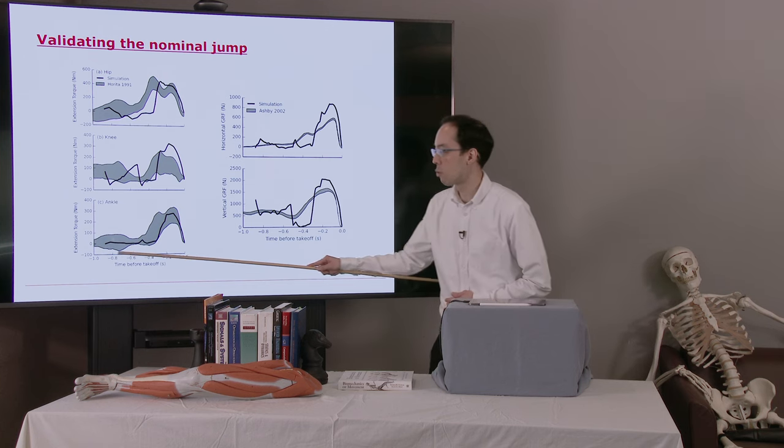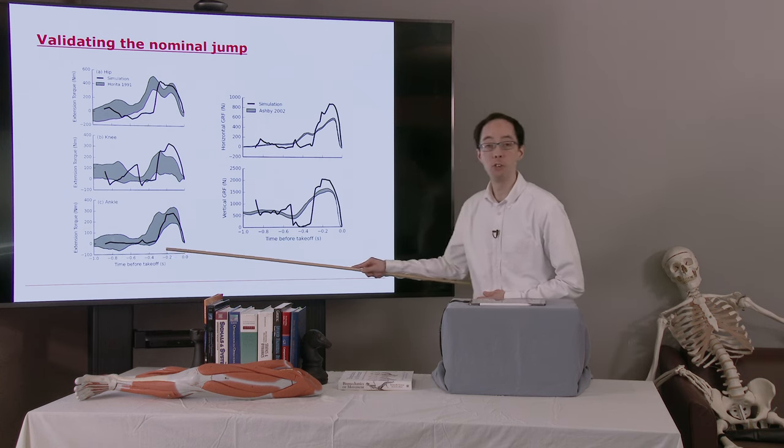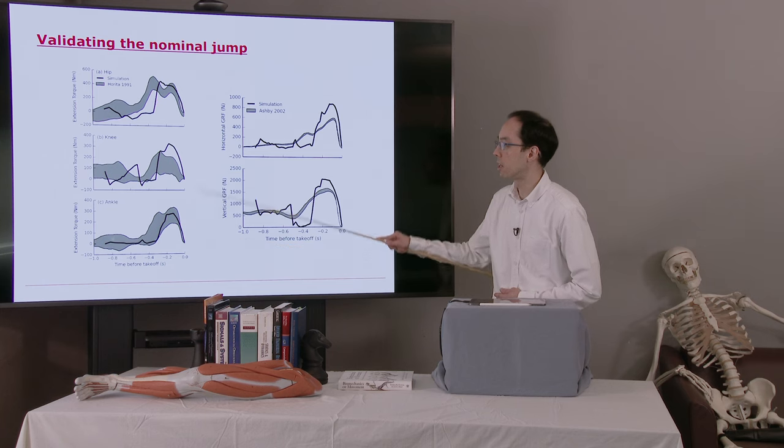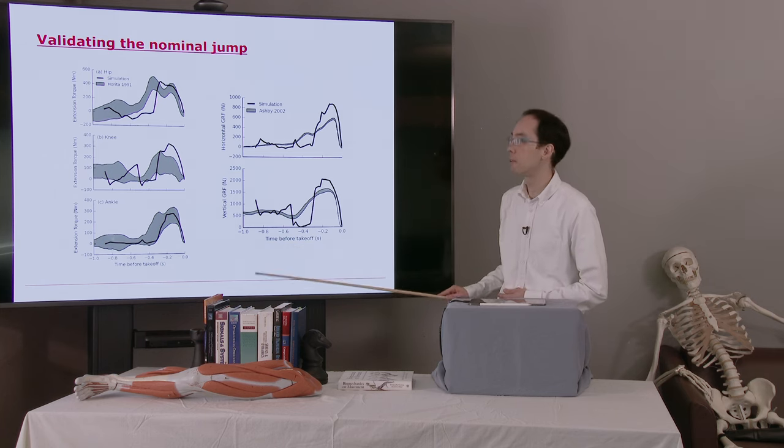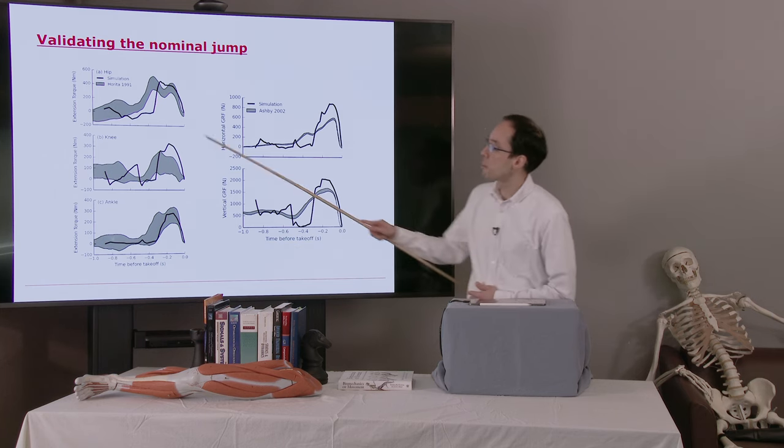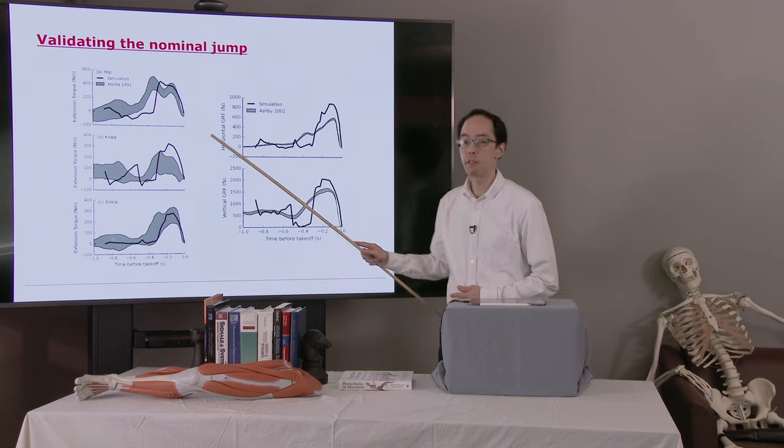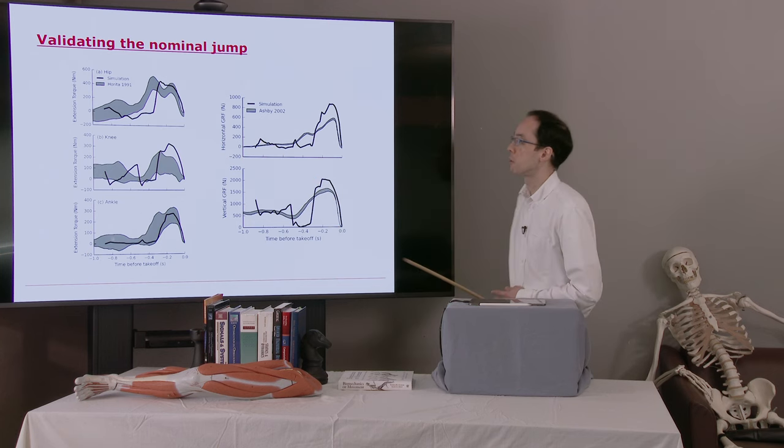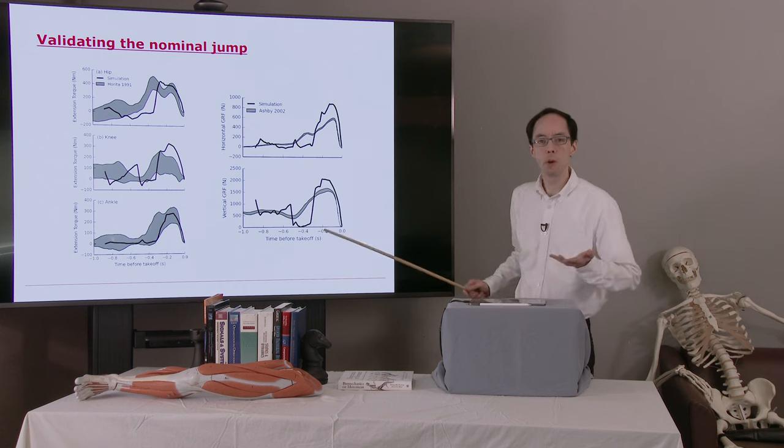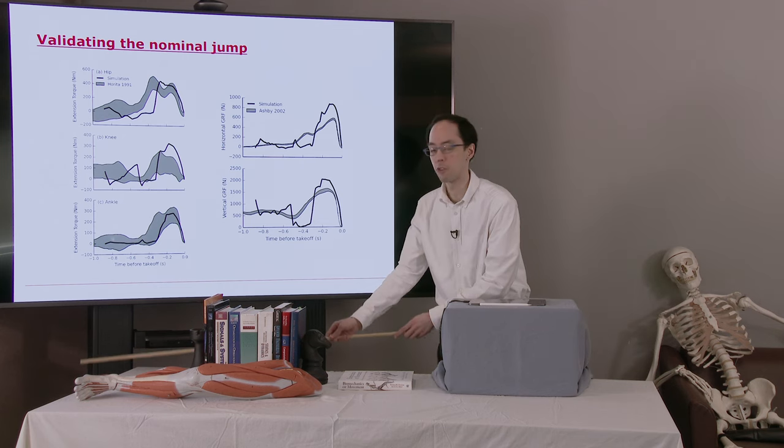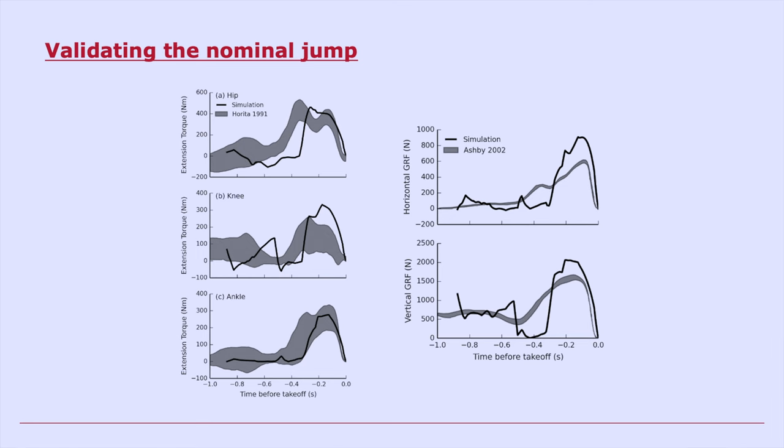So once again, this is the windup in the pitch. This is the counter movement. And then at zero here on the right is where the toe comes off the ground. There are experimental data shown in the gray shaded region. And the simulation is the black line. So you could perform some calculations to compare how close these lines are and make some judgment about whether you think the model's good enough and whether the optimizer is performing well.